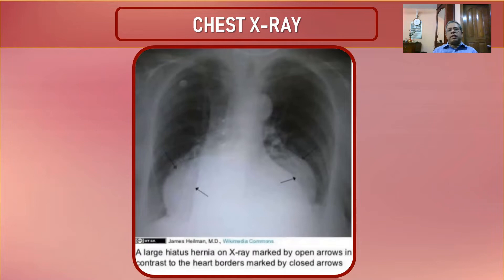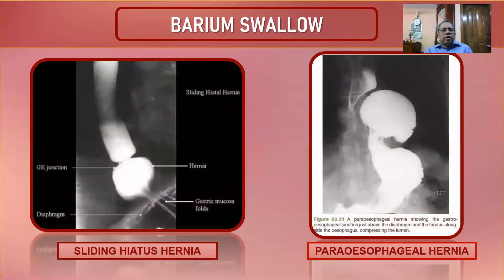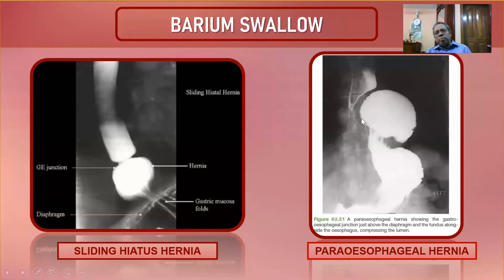On chest X-ray in large hiatus hernia, the stomach can be seen in the chest alongside the heart shadow. In the barium swallow image: sliding hernia shows the gastroesophageal junction migrating above the diaphragm. Para-esophageal hernia shows the gastroesophageal junction in normal position but the fundus herniating through a narrow hiatus alongside the esophagus — causing the para-esophageal appearance.